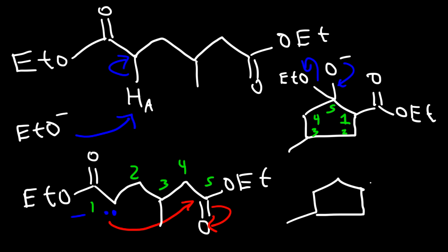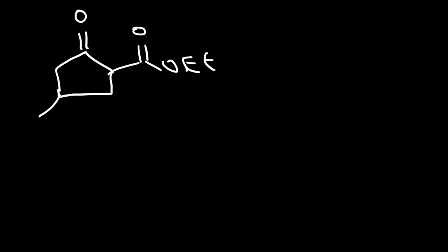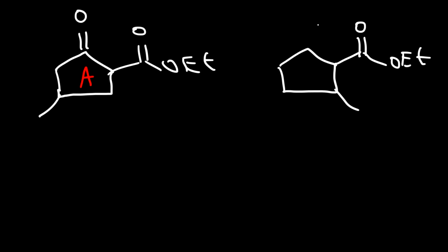Let's draw both products next to each other. For product A, the methyl group is on carbon 3 from the ester. Product B was the one where the methyl group was one carbon away from the ester. So as you can see, we get two different beta-keto esters if we use the Dieckmann condensation on a molecule with two ester functional groups and if that molecule is unsymmetrical.